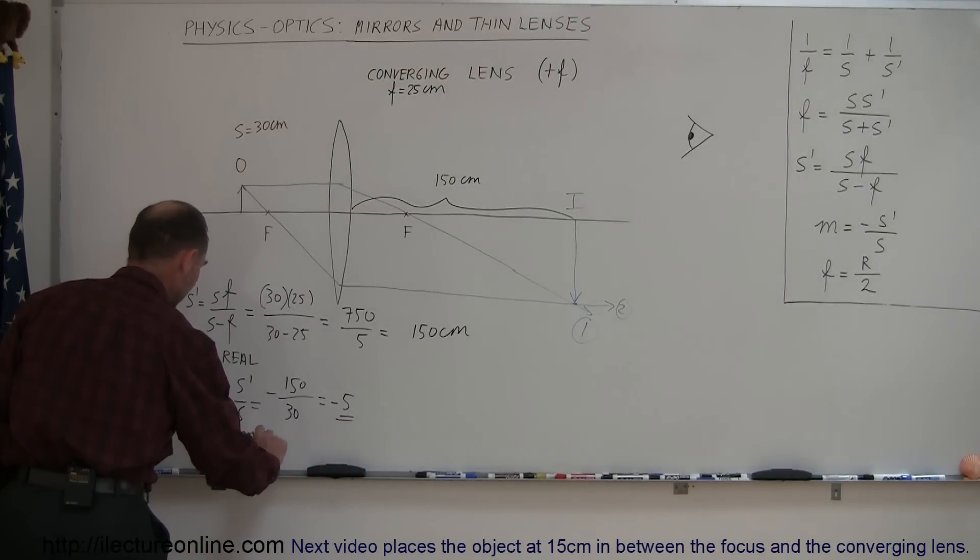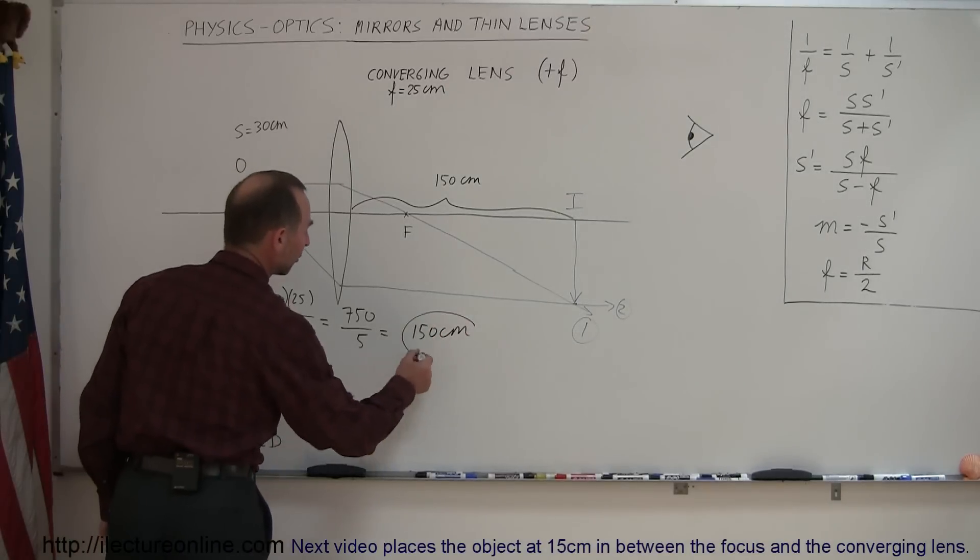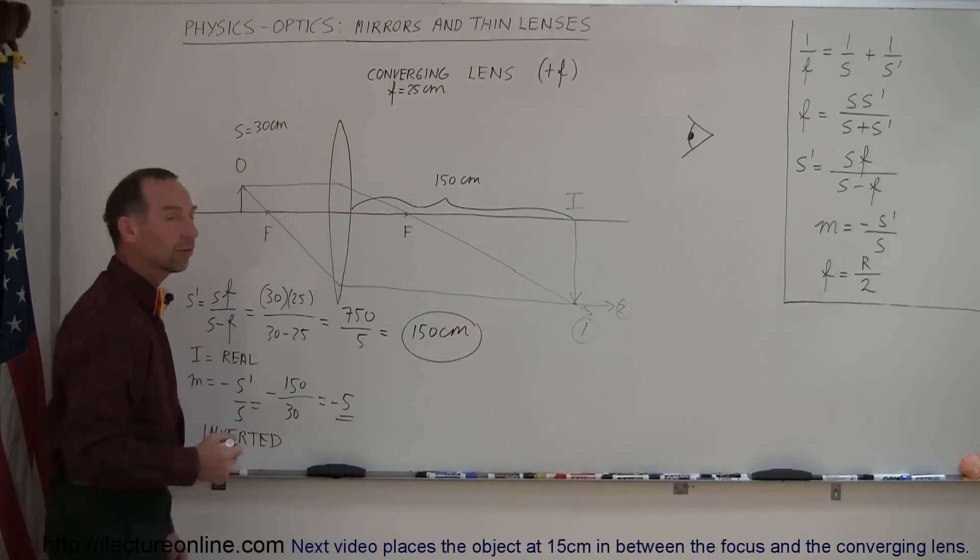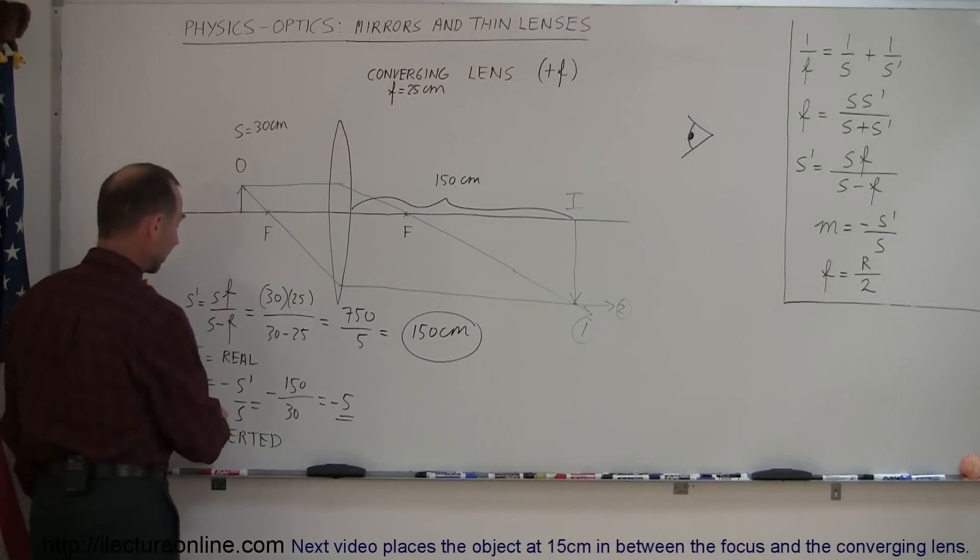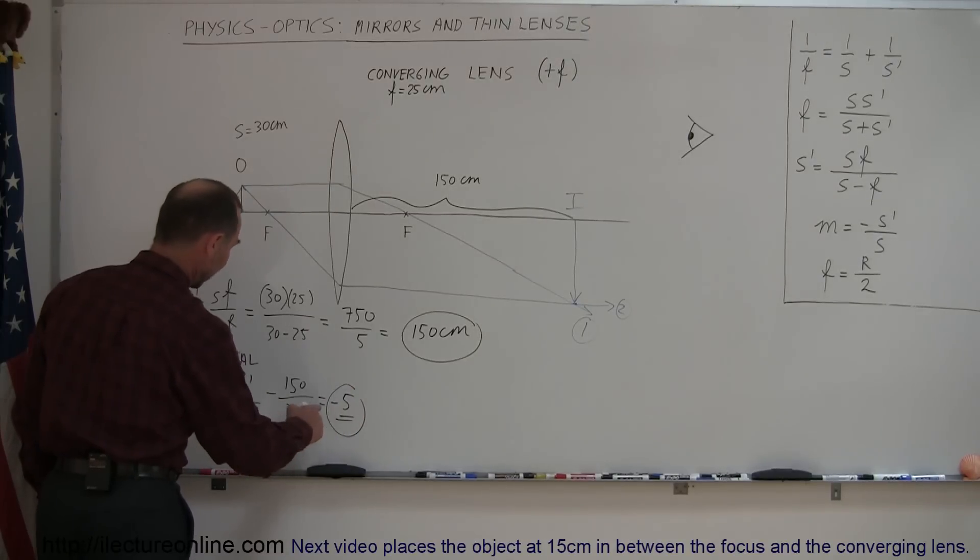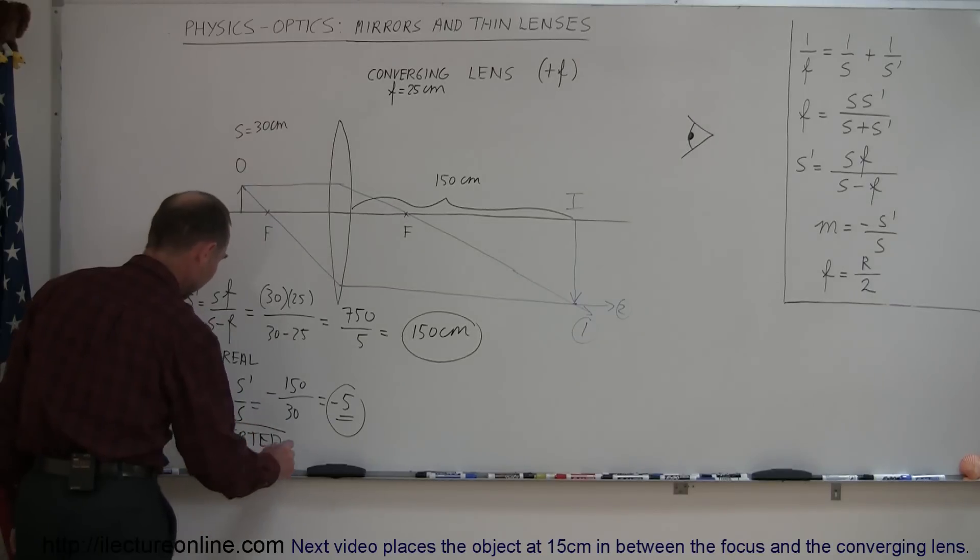So we found everything we needed to find. We found the distance to the image, 150 centimeters, behind the lens, which makes it a real image, so we say image is real. The magnification, five times the original size, and the fact that it's negative means that the image is inverted.